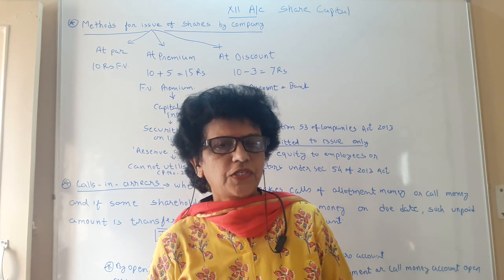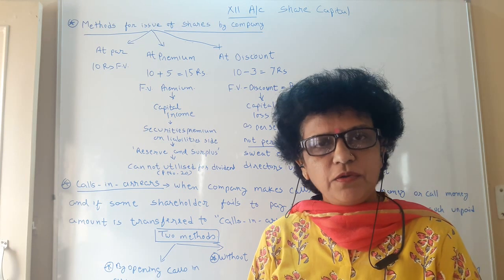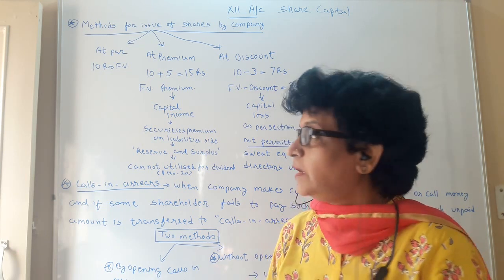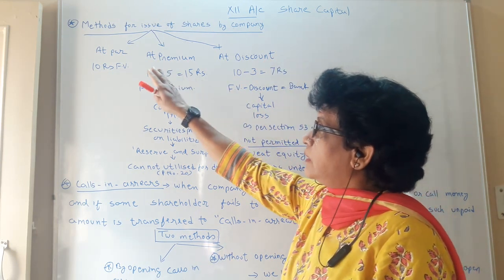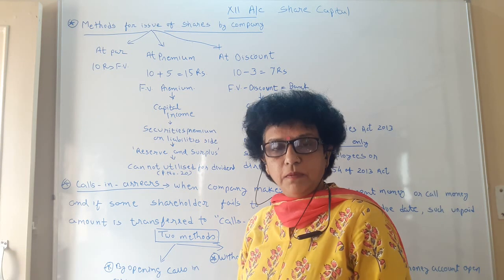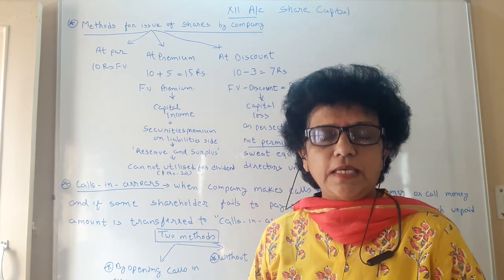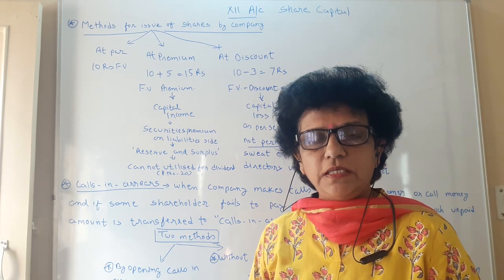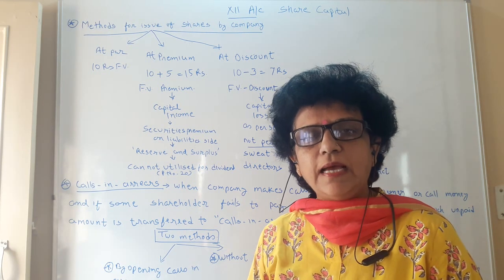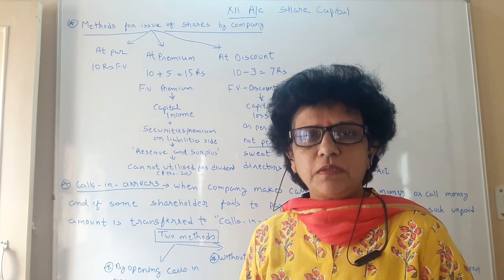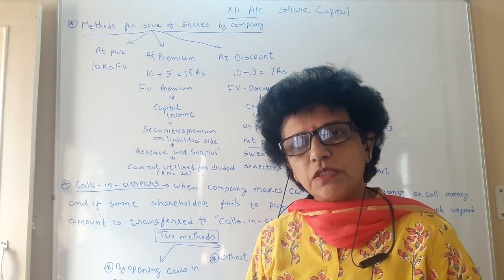Good morning friends. I wish Happy New Year to you all. Let us have a good beginning and new academic session. Today we are going to see in our share capital chapter the method for issue of shares by a company — how the company can issue shares. As we know, shares may be of 1 rupee, 10 rupee, or 100 rupee face value. Normally all companies use to issue shares with 10 rupee as the approximate standard face value.